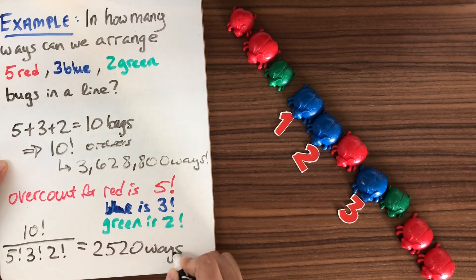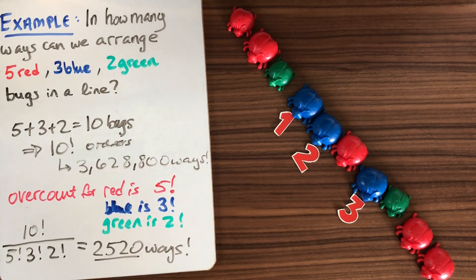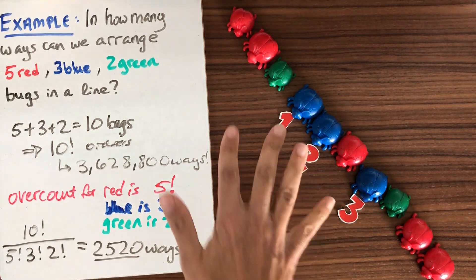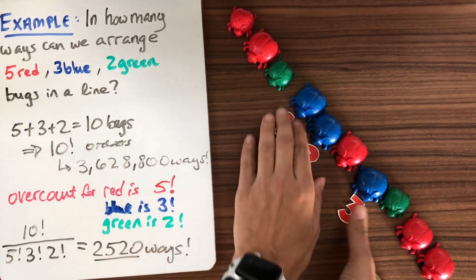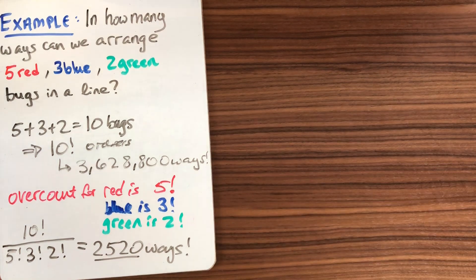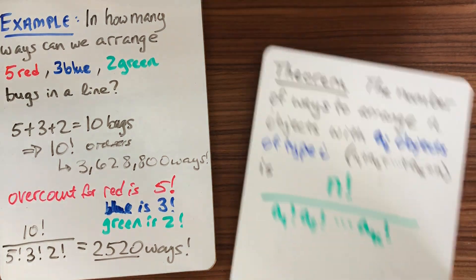So you can see that it makes a huge difference. Instead of 3 and a half million, we're only looking at about 2 and a half thousand. So it's important not to overcount things. So when there is repetition, we want to take that into account. And the general theorem that we have to go along with this is here...